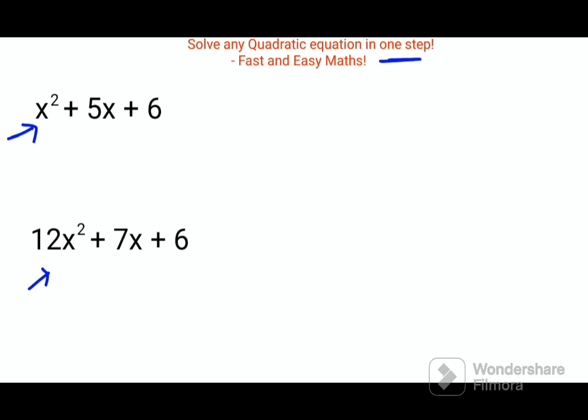For this one, normally traditionally what you do is you try to factorize this constant in such a way that the two factors which you get, their addition or subtraction should get you the middle term - the term which has x with it. So here I can say 6 can be divided as, or rather the two factors which are getting you 6 is 2 into 3.